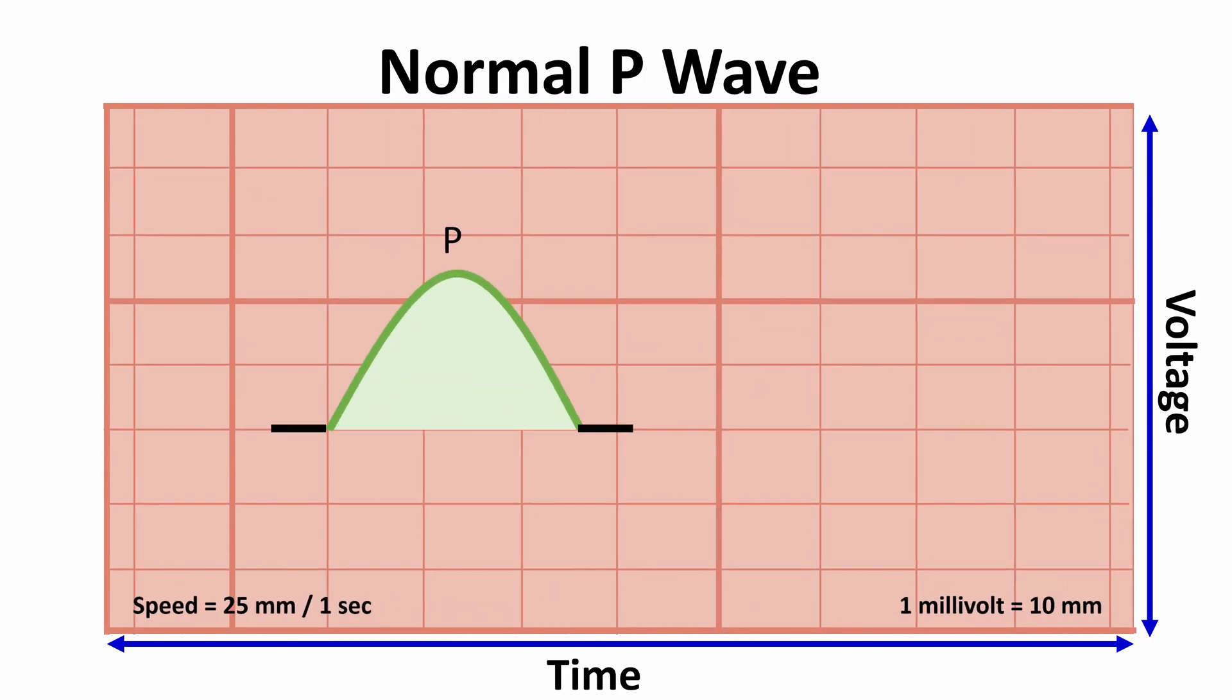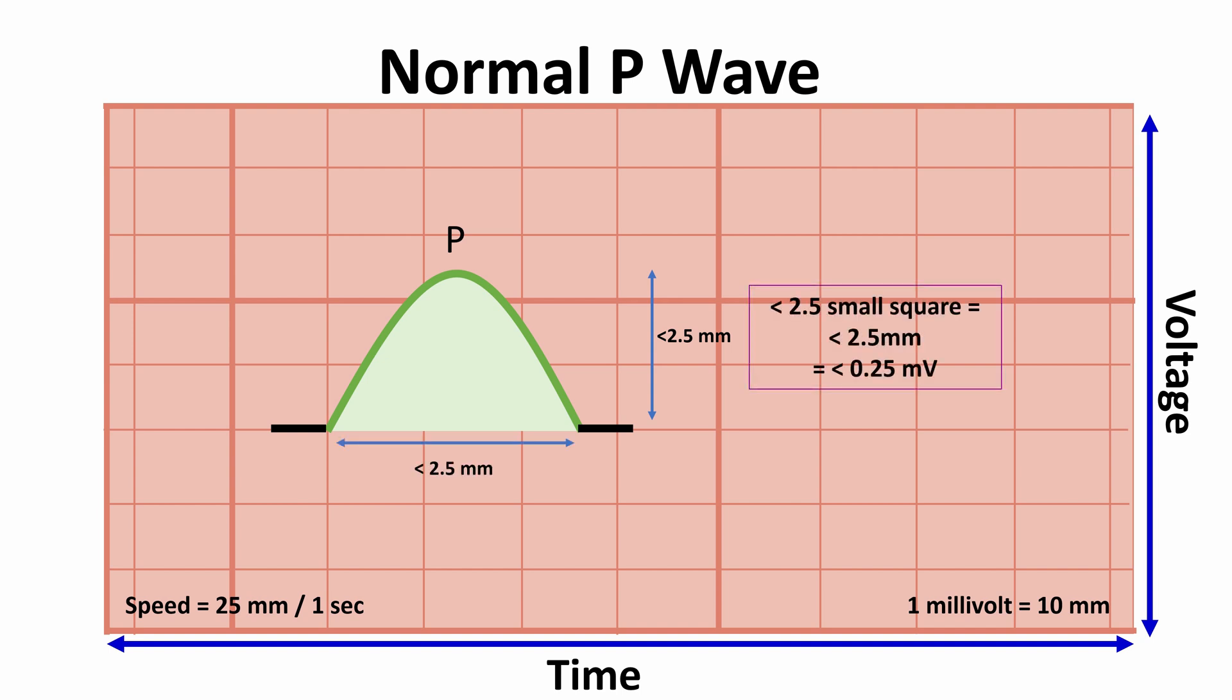A normal P wave meets the following criteria: less than 2.5 mm or less than 2.5 small squares, which equals 0.25 mV in height, when ECG grid is set so that 1 mV equals 10 mm, that equals 10 small squares.